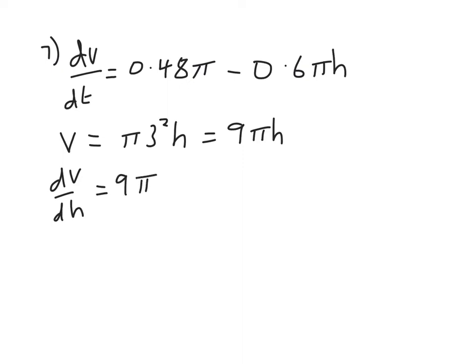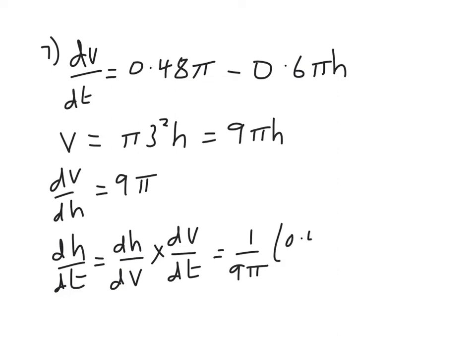Now their formula's got dh/dt in it, so dh/dt is dh/dv times dV/dt. So dh/dv is 1 over 9π, and dV/dt is 0.48π minus 0.6πh.